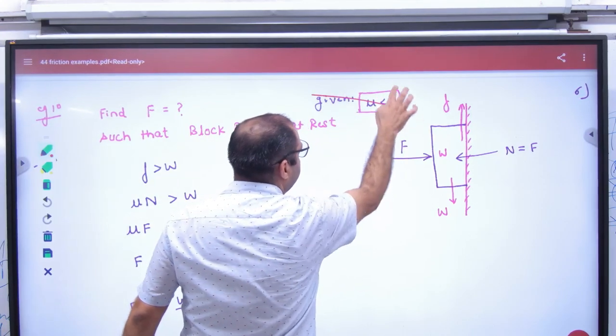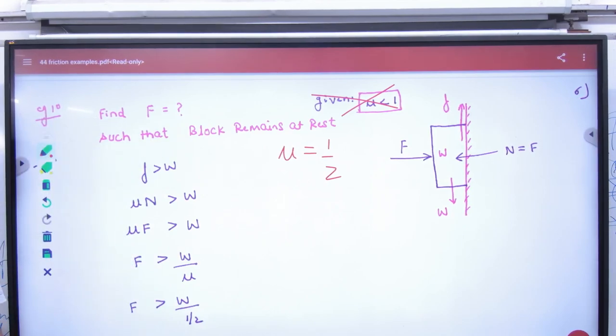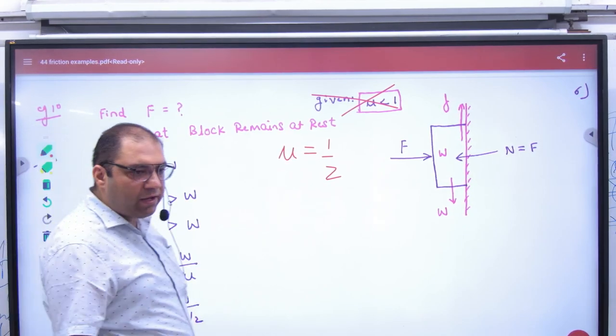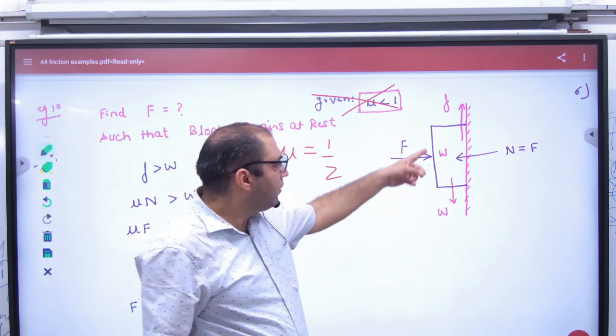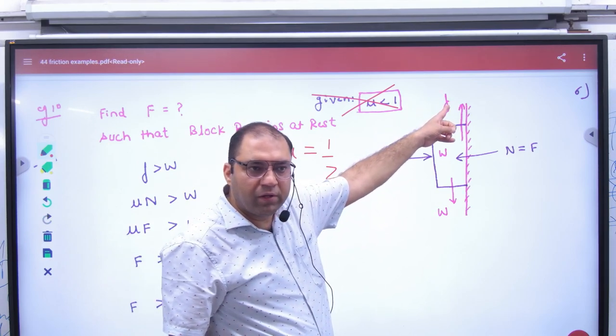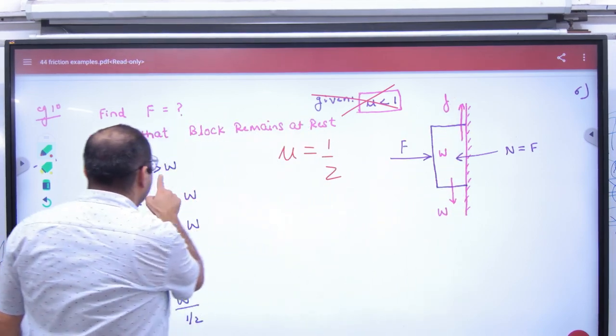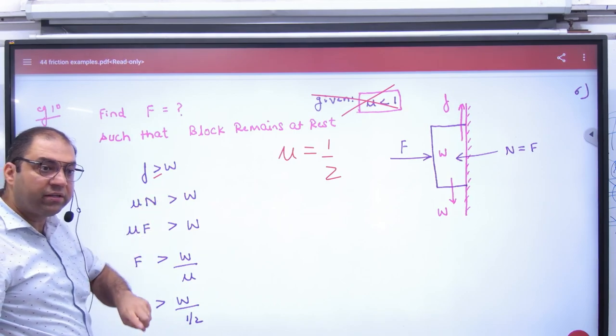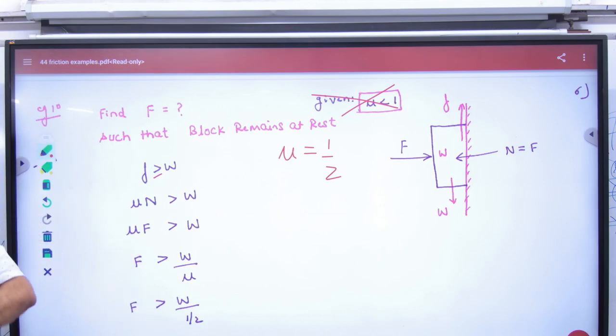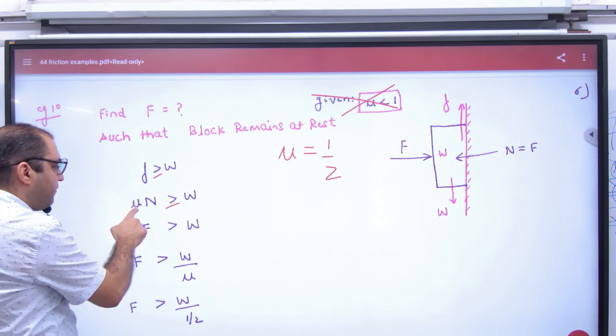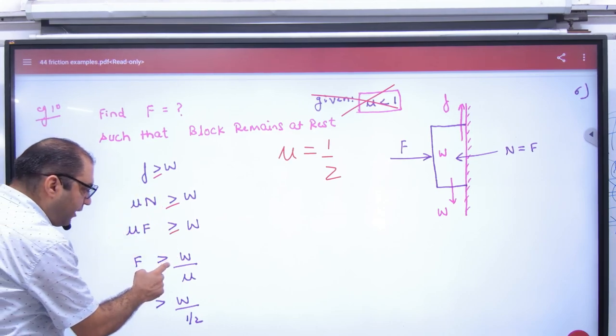Mu ki value given karo half. Question hai, suppose this time I pressed the block with F. To normal reaction kya hai? F. Weight W and friction upar hai. To question hai, this block should not fall down. And if it should not fall down, friction F should be greater than equal to W. Weight ke equal ho, ya friction usse badi ho. Niche nahi girega. To normal reaction, force of friction is mu times normal reaction. Normal reaction here is F. So F ki value greater than equal to W by mu.